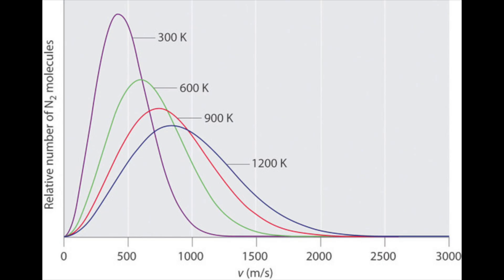This graph shows the distribution of molecular speeds for nitrogen gas at different temperatures. As you increase temperature, the average molecular speed also increases.